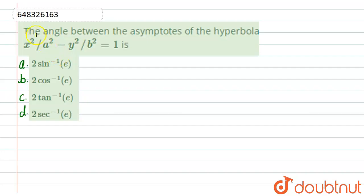Hello students, so the question is: the angle between the asymptotes of the hyperbola x square by a square minus y square by b square is equal to 1.